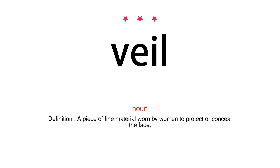Veil. Noun. Definition: A piece of fine material worn by women to protect or conceal the face.